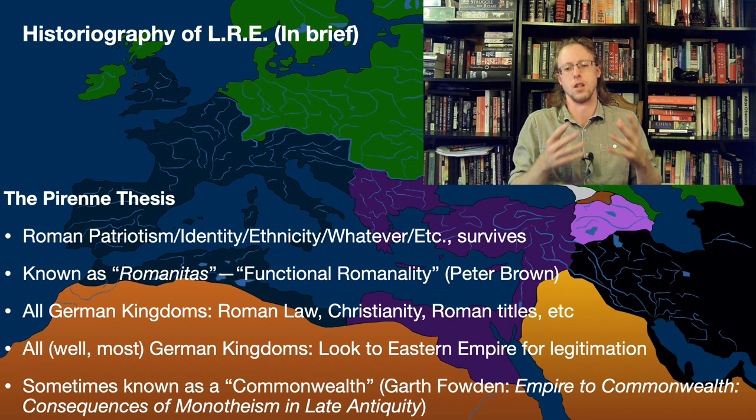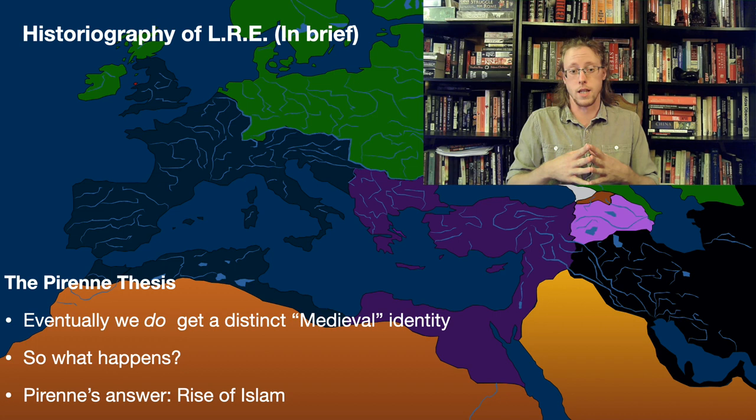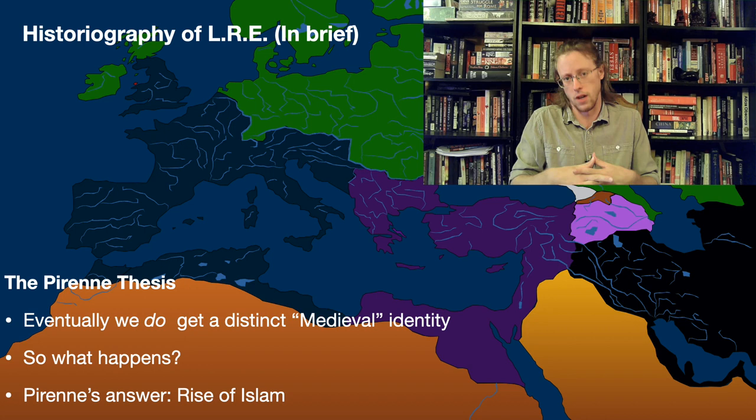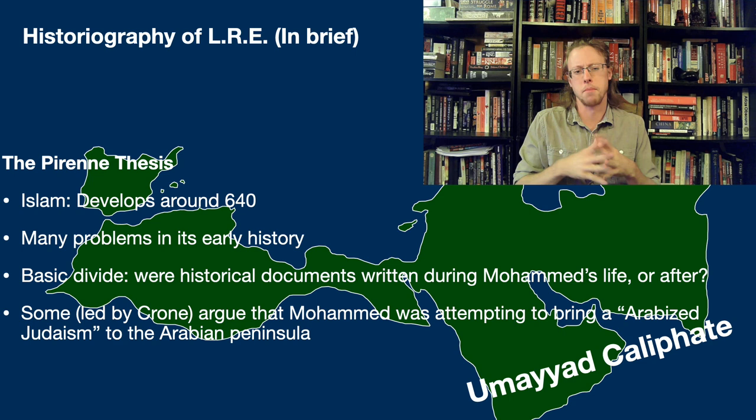Pirenne is arguing that the lack of political unity has been overstated — there is a survival of Roman identity, and this is what matters for how and why the Roman Empire really comes to an end and how medieval Europe develops. That change comes in the form of the Islamic conquests. Islam develops around 640 and conquers Persia, North Africa, most of the Roman Middle East, and a portion of Spain very quickly.